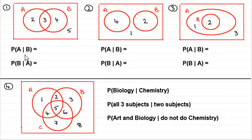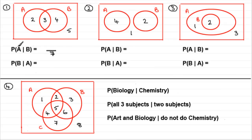If we're asked what's the probability that someone does art given that they do biology — P(A|B) — all we need to do is say: we know they do biology, so how many people do biology? We can see three and four do biology, a total of seven people. So our denominator is seven. Now, out of those seven people, only three also do art. So it's three out of seven.